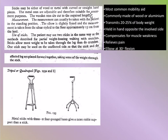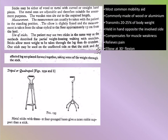Sticks may be either wood or metal with curved or straight handpieces. Metal ones are adjustable and suitable for assessment purposes; wooden ones are cut to the required length. Measurement is taken with the patient standing, elbow slightly flexed, from the ulnar styloid to the floor approximately 15 cm from the heel. The patient may use two sticks the same way as partial weight bearing with crutches. Sticks allow more weight to be taken through the legs than crutches. One stick may be used on the unaffected side, placed forward with the affected leg together. Tripod and quadrupod sticks with three or four prong bases give more stable support.